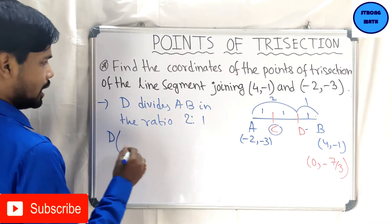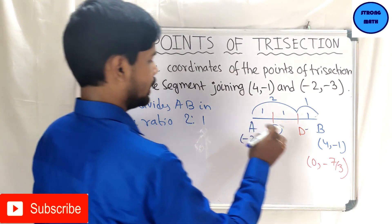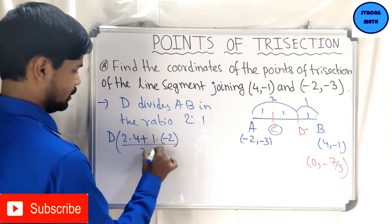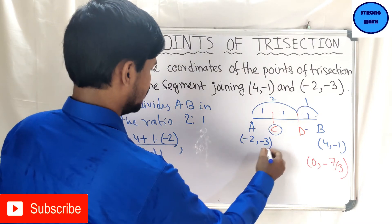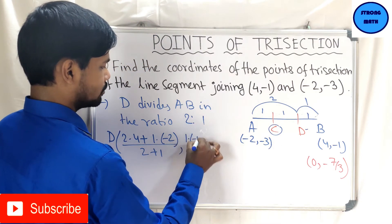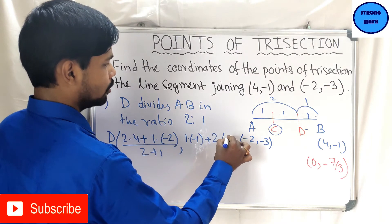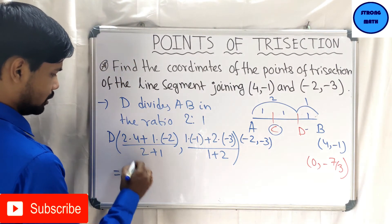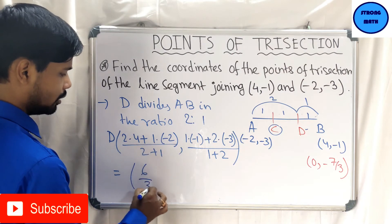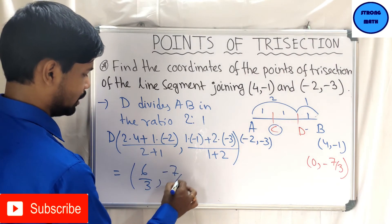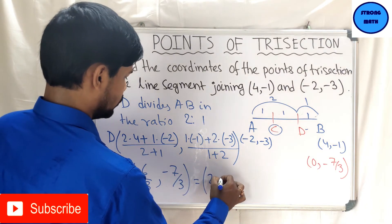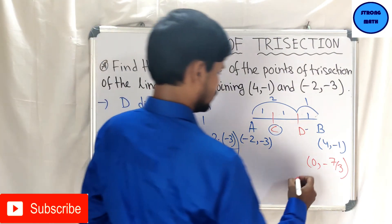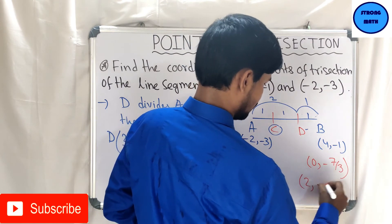Coordinates of D: x-coordinate is (2×4 + 1×(−2))/(2+1) = (8−2)/3 = 6/3 = 2. Y-coordinate is (1×(−1) + 2×(−3))/(1+2) = (−1−6)/3 = −7/3. So the coordinates of D are (2, −7/3).